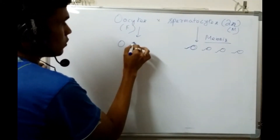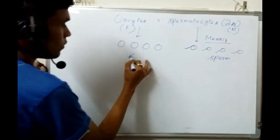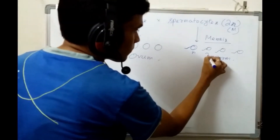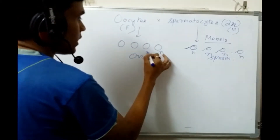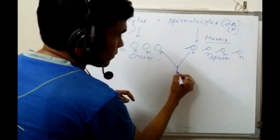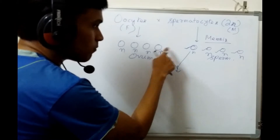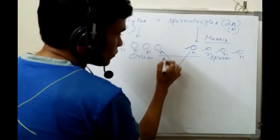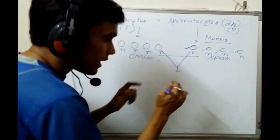Similarly on the female side, the oocyte also produces four cells — four ova. All of these are haploid (N number of chromosomes). When the ovum is fertilized by the sperm, the two N numbers combine to form 2N again.